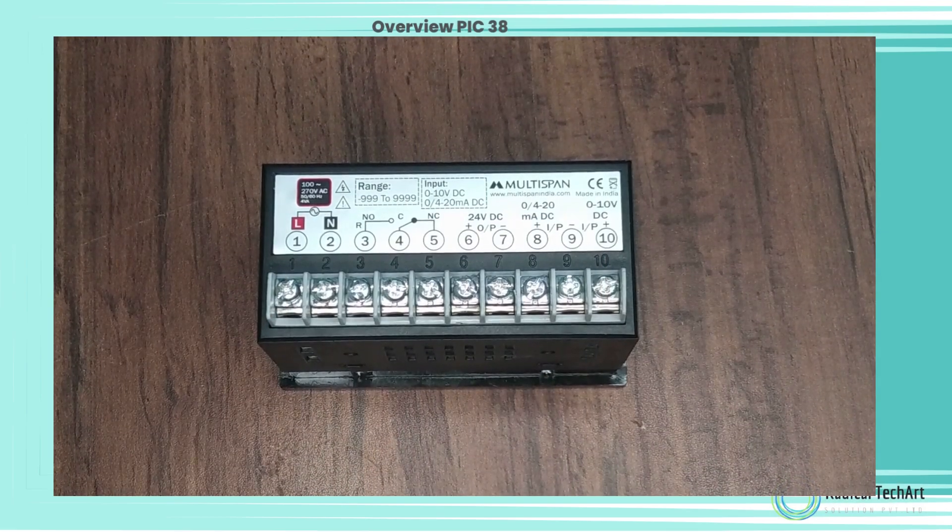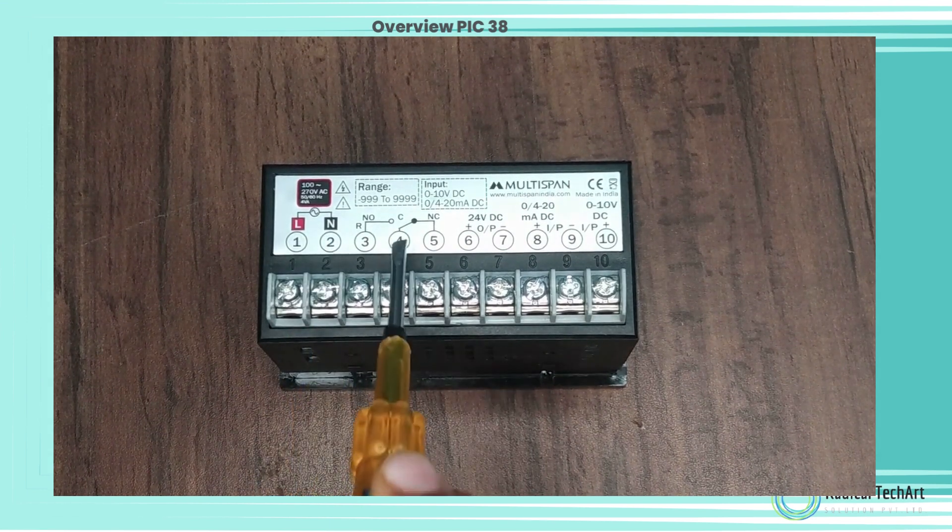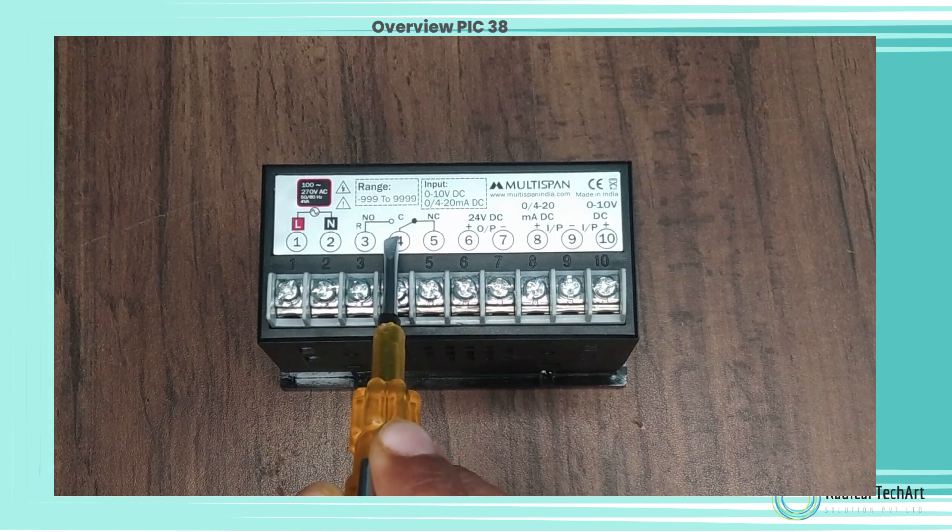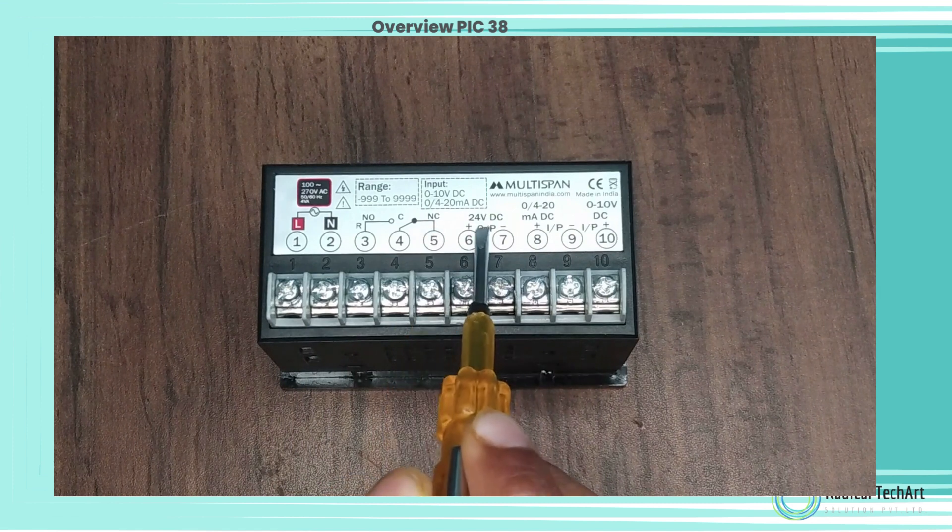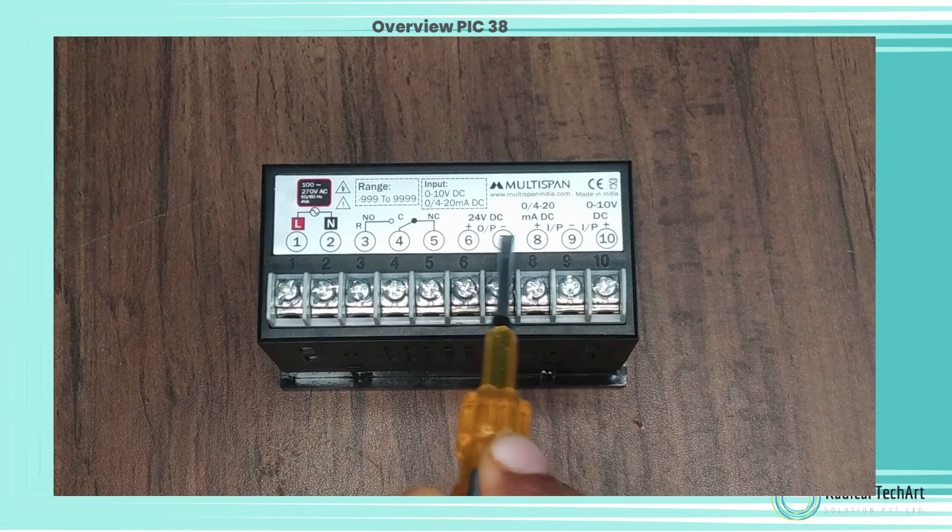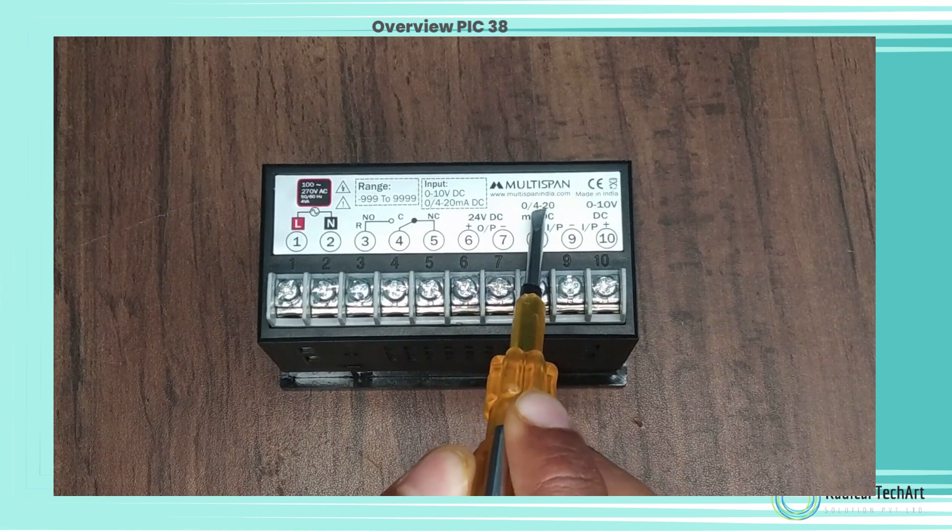Here is the wire diagram of this product. In first and second you will get L and N 230 volt AC, and in 3, 4 and 5 you will get the relay.